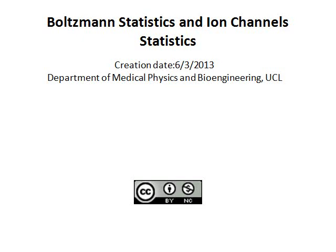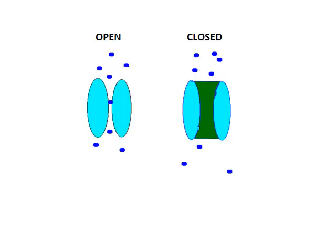Boltzmann statistics and ion channel statistics. We can think of an ion channel as a simple two-state system. It is either open or closed. By using the Boltzmann statistics and the Markov model, we are able to deduce the energy difference of the two states by measuring the average closed and open times of the ion channel.